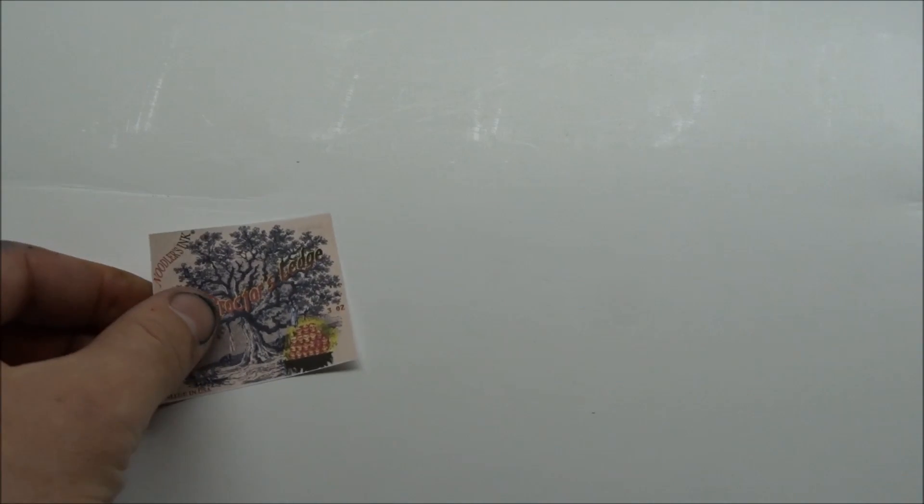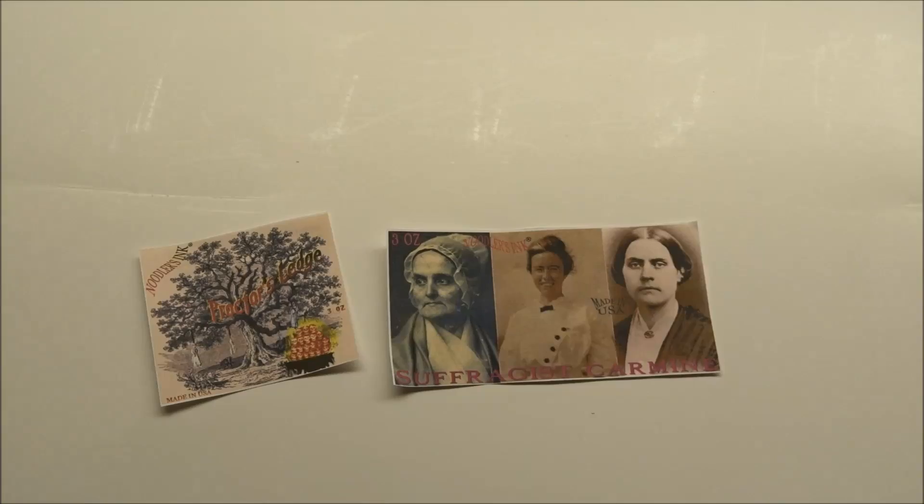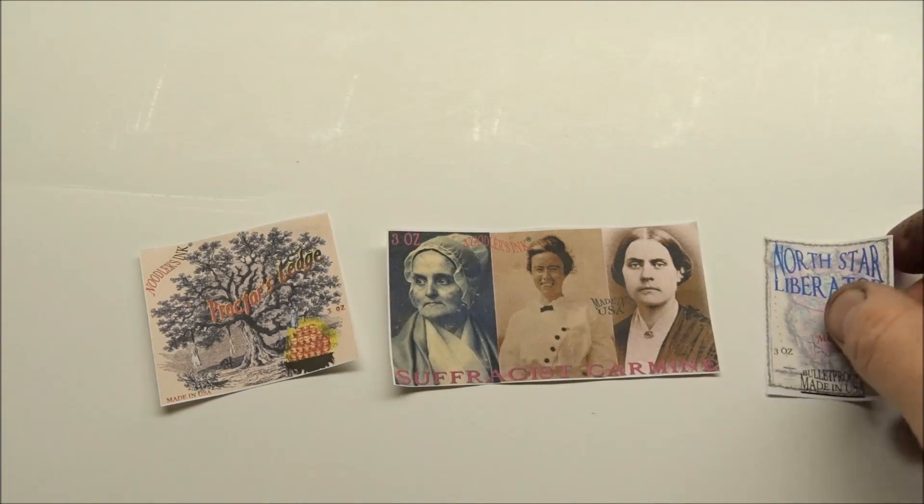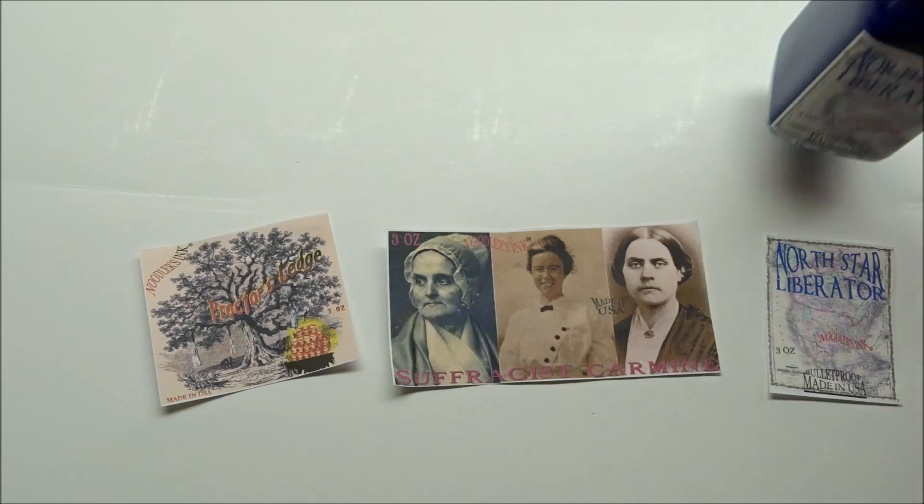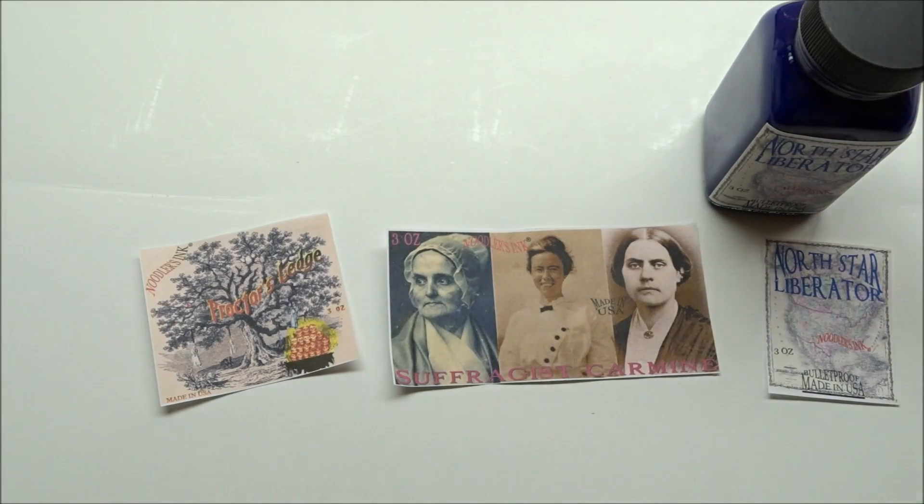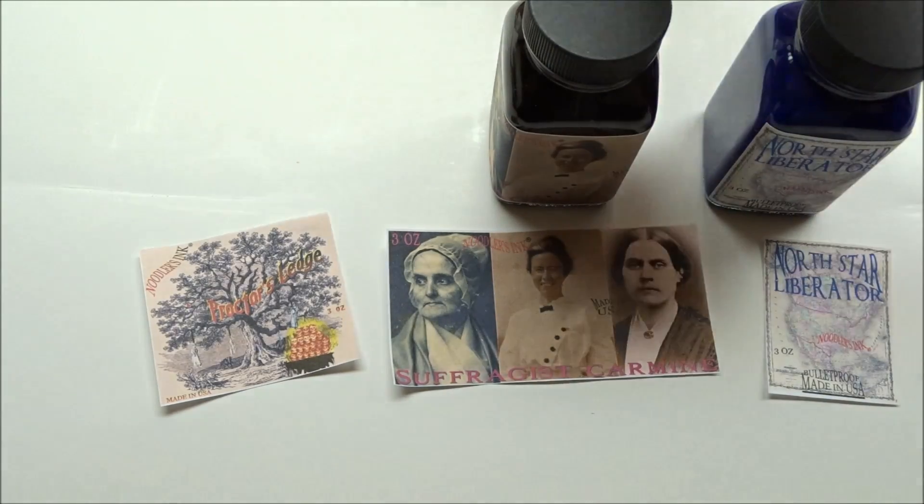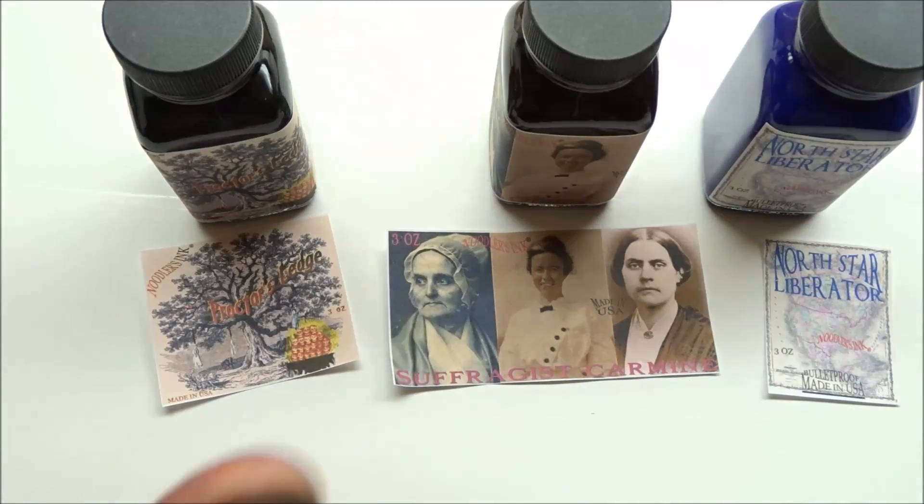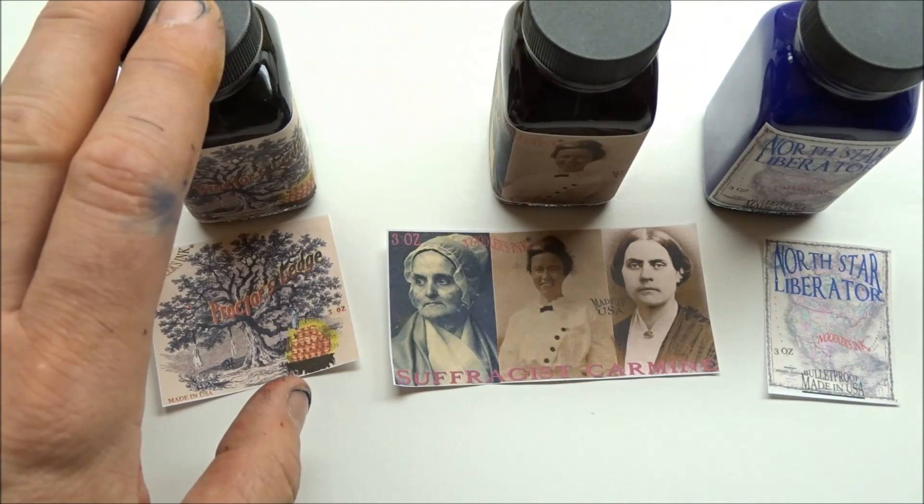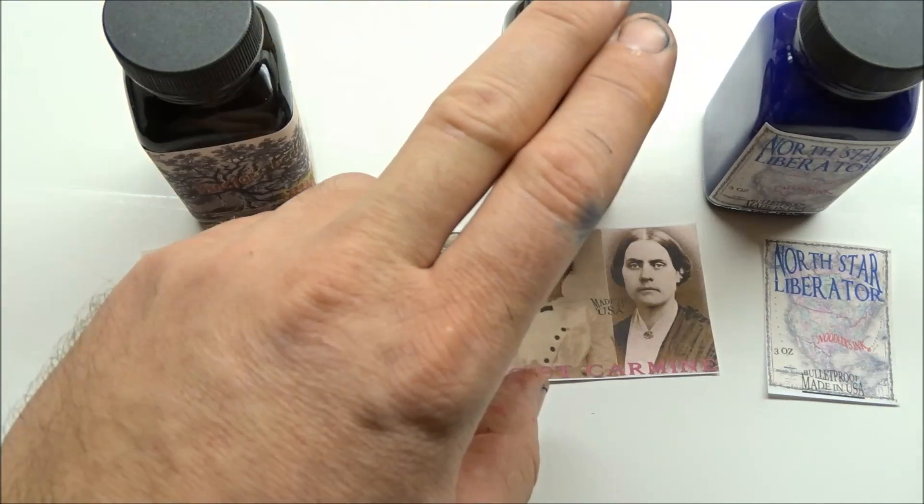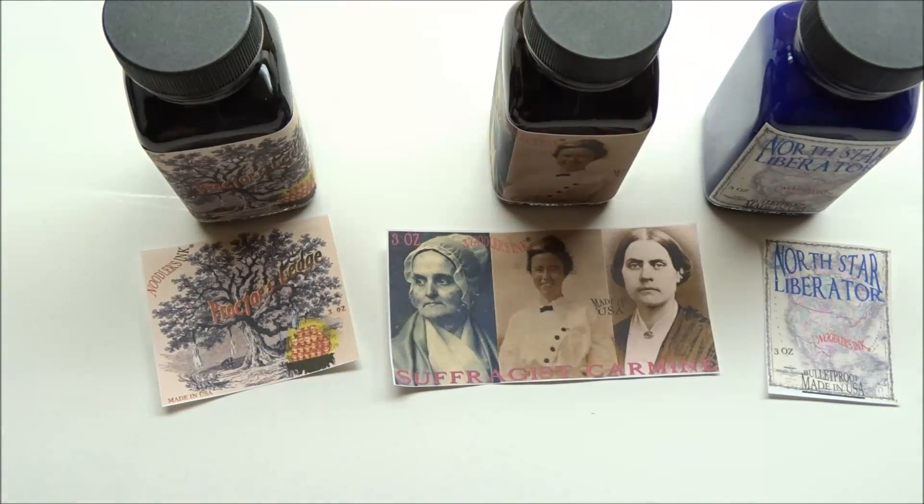There are three inks that are going to be available at the Commonwealth pen show. This is a theme that dates back to 1692, this is a theme that dates back to the 19th century to approximately the early 1920s.